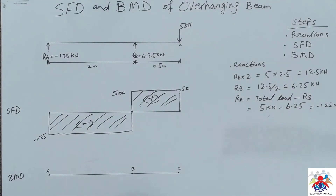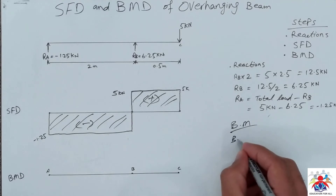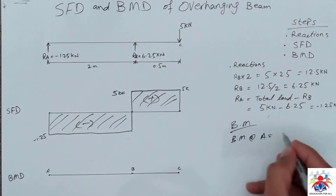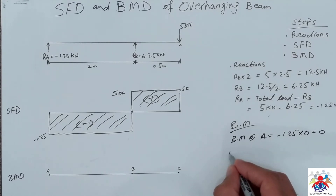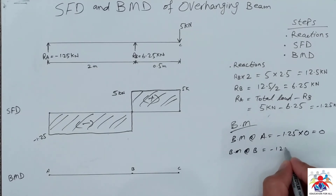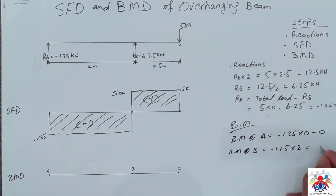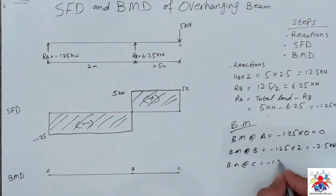Now we move on to the bending moment diagram. To draw it, we have to calculate the bending moments at each point. Bending moment at point A is always zero, so minus 1.25 multiplied by zero equals zero. Bending moment at point B will be minus 1.25 multiplied by 2, which equals minus 2.5 kilo-newton.